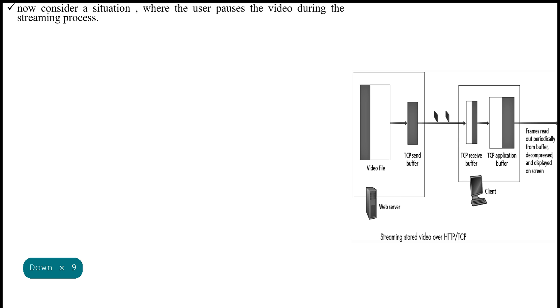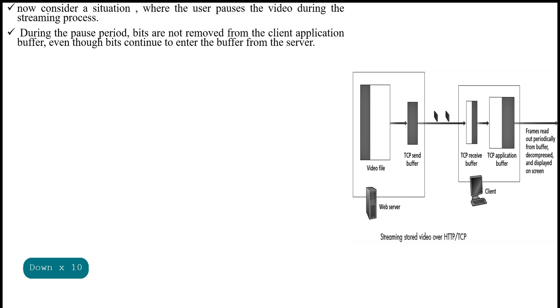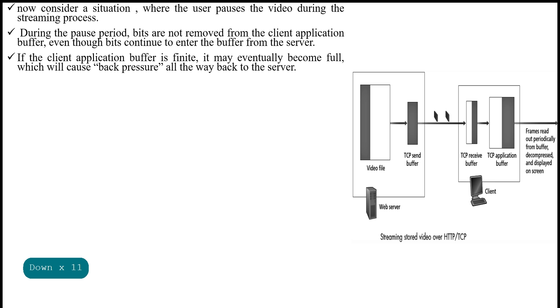Now consider a situation where the user pauses the video during the streaming process. During the pause period, bits are not removed from the client application buffer, even though bits continue to enter the buffer from the server. If the client application buffer is finite, it may eventually become full, which will cause back pressure all the way back to the server.